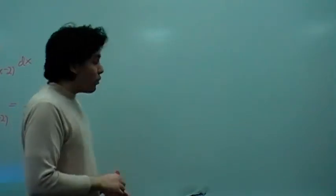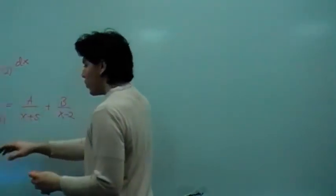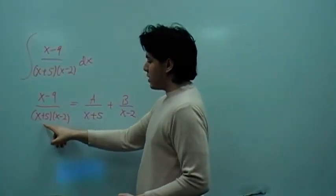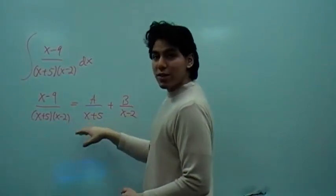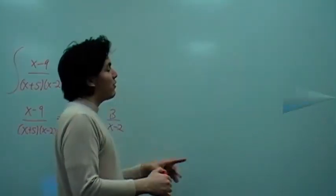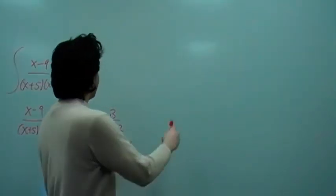Okay, now what we're going to do is we're going to multiply the quantity (x plus 5)(x minus 2) on both sides so we can take out the fractions on both sides of the equation. Now, let's continue from here.